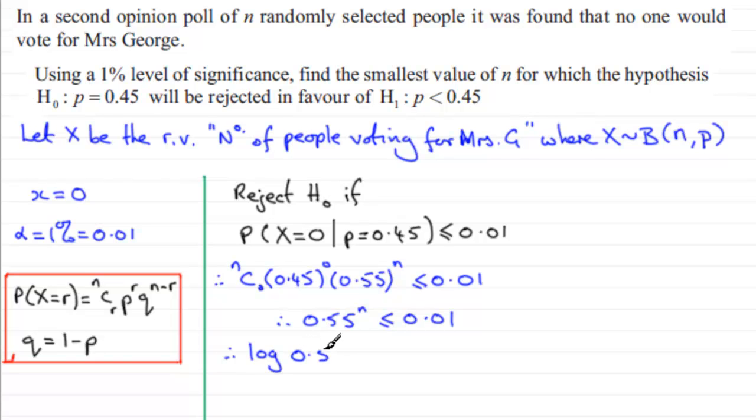What we've got here is log of 0.55 to the power N is less than or equal to the log of 0.01. You can use any base, do experiment with this. Next, I use the power rule for logs. The power here can be brought out the front of the log. Therefore, we have N log of 0.55 is less than or equal to the log of 0.01.